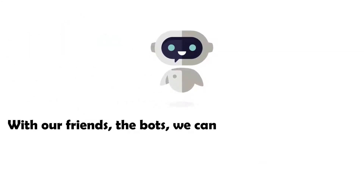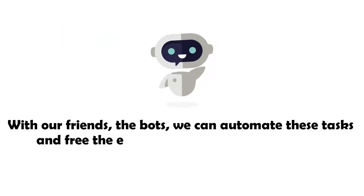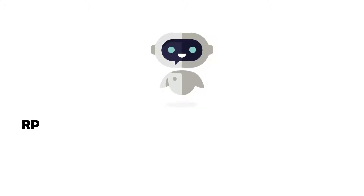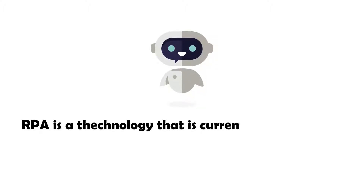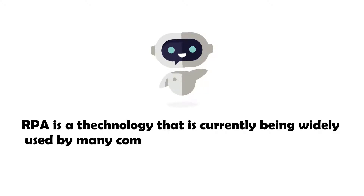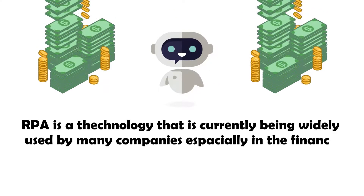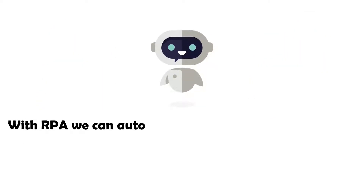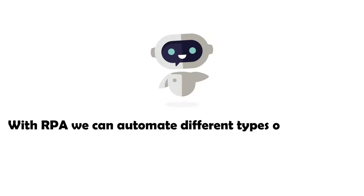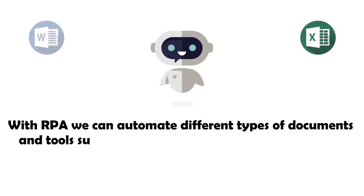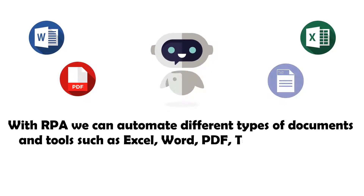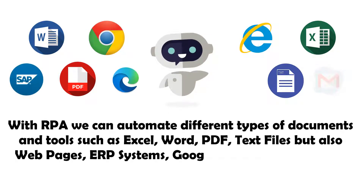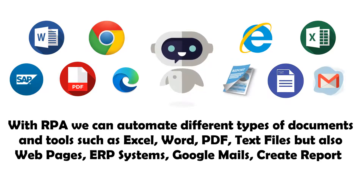With our friends, the bots, we can automate these tasks and free the employees from them, so they can concentrate on other things. RPA is a technology that is currently being widely used by companies, especially in the finance sector because it involves a lot of routine work. With RPA we can automate different types of documents and tools, such as Excel, Word, PDF, text files, but also web pages, ERP systems, Google Mail, create reports, and much more.